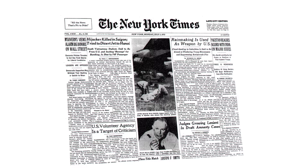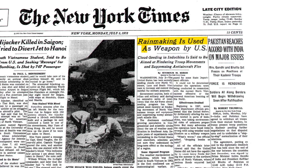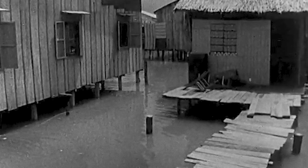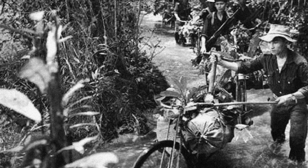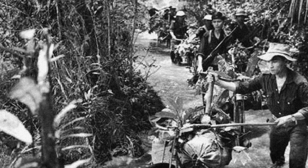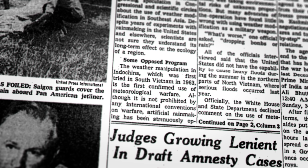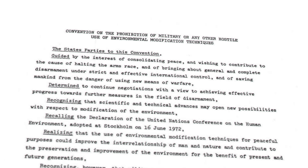The goal was to extend the monsoon season and therefore create strong floods that damage roads and cause landslides. The US especially targeted the Ho Chi Minh Trail, which was the primary supply route used by North Vietnam in order to infiltrate troops, weapons and supplies into South Vietnam. Using cloud seeding as a weapon of war causing enormous damage to civilians raised a number of moral questions, and in 1977 an international agreement was signed by many nations worldwide that prohibits the military use of such means.